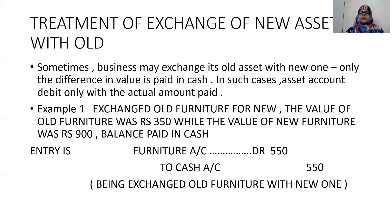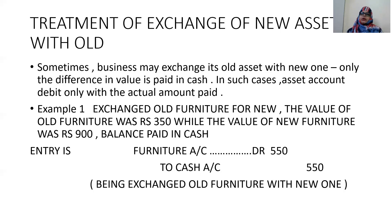Sometimes a business may exchange its old assets with new ones, and only the difference in value is paid in cash. In such cases, the asset account is debited with the actual amount paid. Whatever amount is paid for the new asset, that actual amount is debited to the asset account. We subtract the value at which we sold the old asset from the value of the new asset, and write down that net value — old asset value minus new asset value gives the actual amount to record.